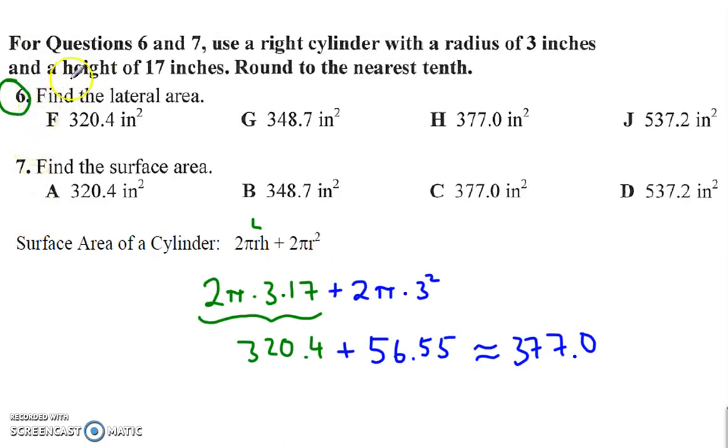Numbers six and seven, we are finding the lateral and surface area of a right cylinder with a radius of three and a height of 17. Here's our formula. This first part is the lateral area. So the lateral area in green here, two pi times three times 17, which is 320.4.